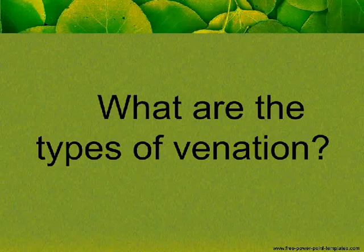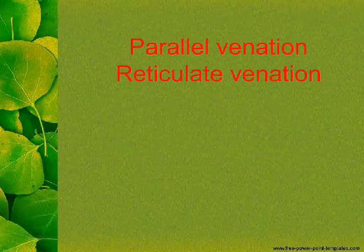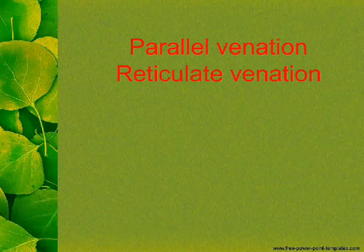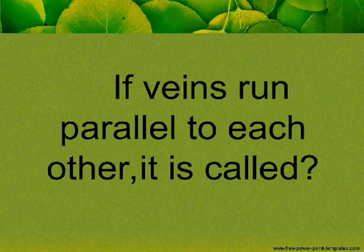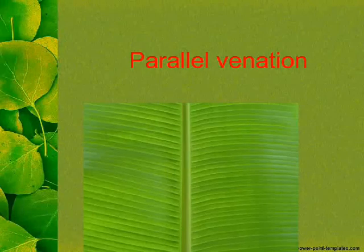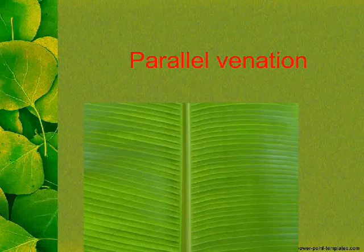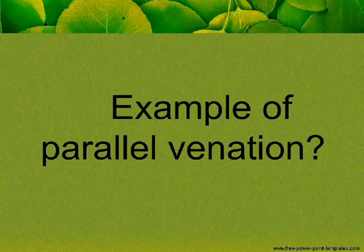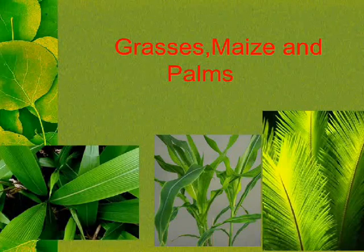What are the types of venation? The two types are Parallel Venation and Reticulate Venation. If veins run parallel to each other, it is called Parallel Venation. Examples of Parallel Venation include grasses, maize, and palms.